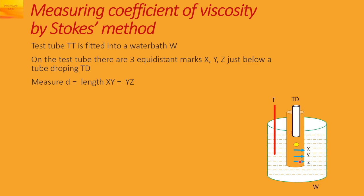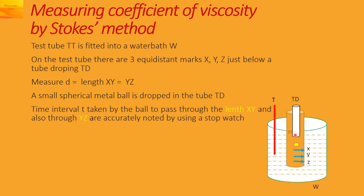So the small spherical metal ball is dropped in this tube TD and we will note the time interval T taken by the ball to pass through this length X-Y and this length Y-Z. It is noted with the help of a stopwatch.